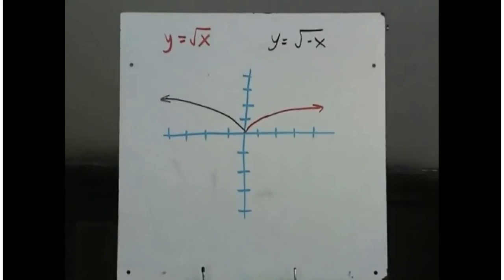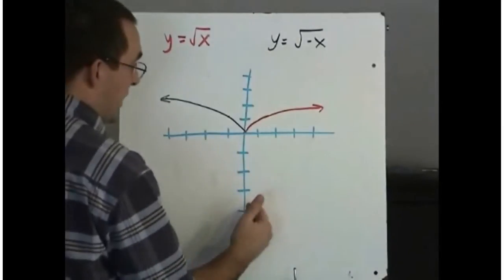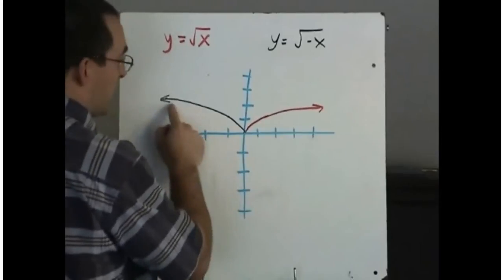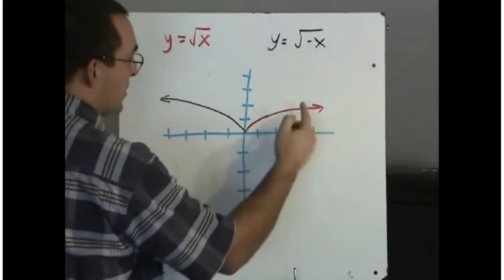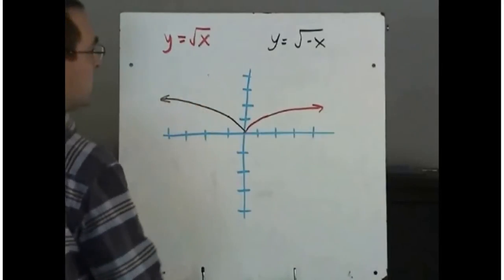We can see that the graph has been reflected in the y axis. Remember this is your x axis here and this is your y axis here. So this function here is a mirror image of this one. If you took that function and reflected it about the y axis.